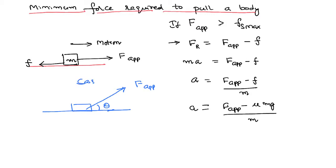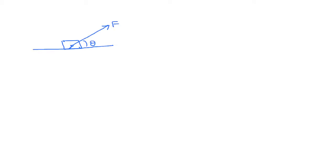So in this second case I would like to derive the minimum force required. Let us consider a situation where you have applied a force F making an angle theta to the horizontal. The body has some mass, therefore its weight will always act in the downward direction. As you try to pull the body from left to right, the frictional force will come into the picture opposing the relative motion. Since the force is neither along the horizontal nor the vertical direction, we resolve this force into two components using vector resolution.